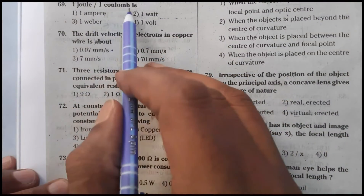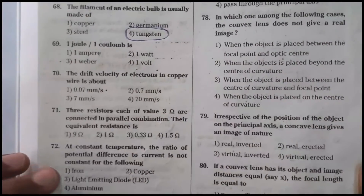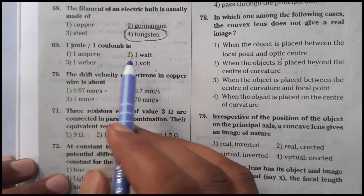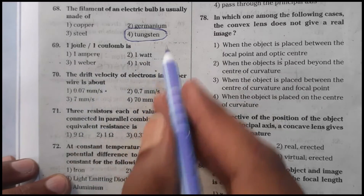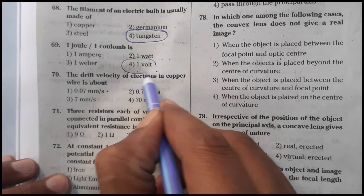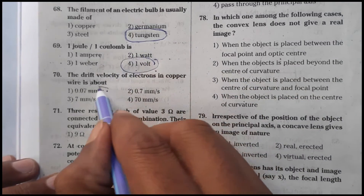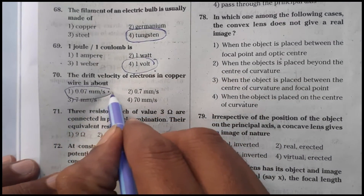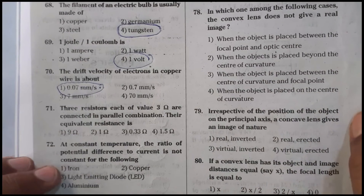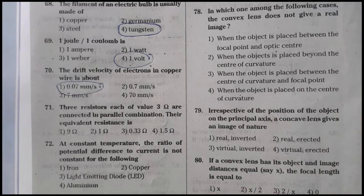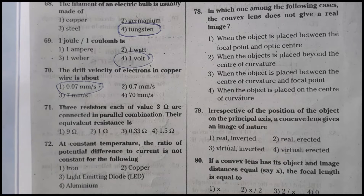The options for question 69 are: one ampere, one watt, one Weber, or one volt — the answer is one volt. Question 70: The drift velocity of an electron in a copper wire is about 0.07 millimeters per second. Drift velocity is the constant average velocity of an electron during its journey in a conductor.